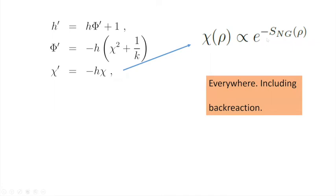The equation of motion for chi from the first-order reduction is almost topological, and it tells you that the wave function for the winding mode should go like e to the minus the Nambu-Goto action everywhere — not only far from the tip, but everywhere — including the back-reaction of the winding mode. This is very encouraging and suggests we are on the right track.